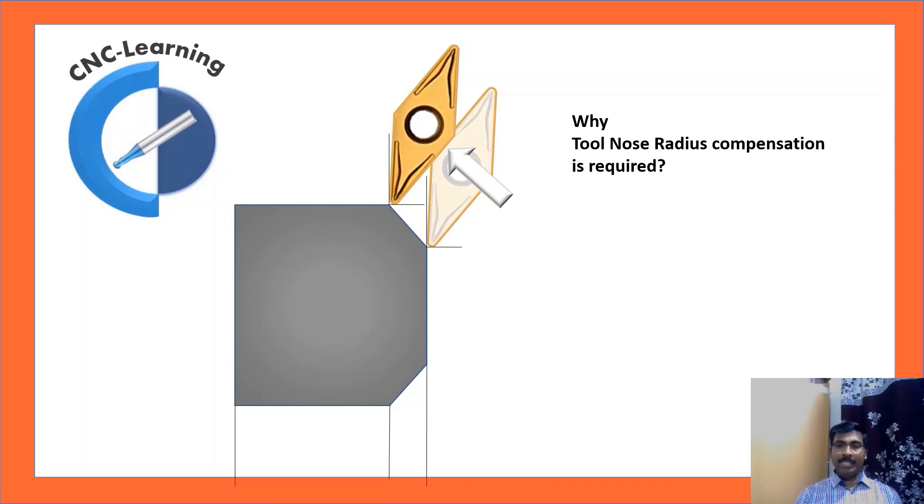Now we will see why tool nose radius compensation is required. If TNRC is not used, material will be left out on chamfer and radius profiles.